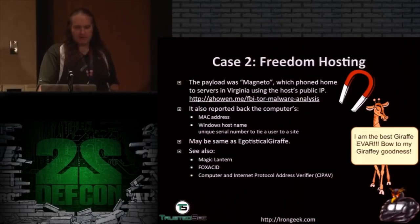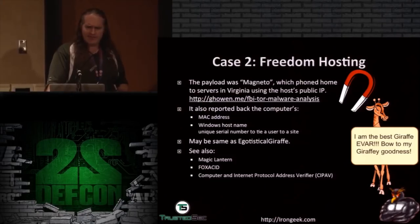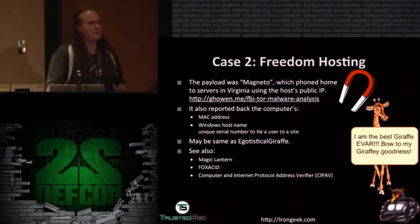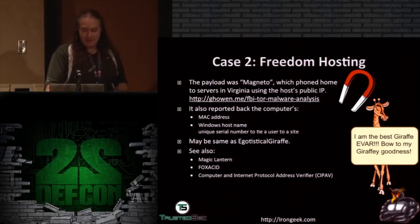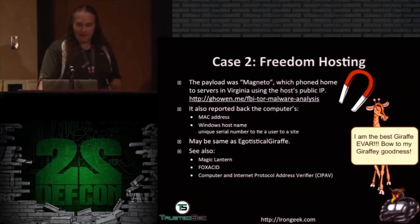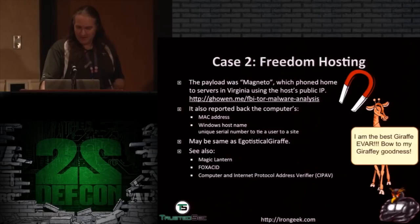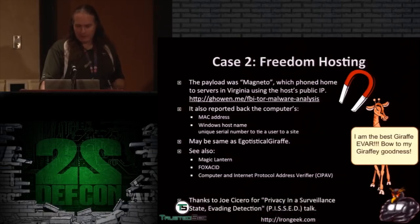This is similar to a Snowden-document project called 'Egotistical Giraffe.' There's a long history of law enforcement installing malware to track suspects: Magic Lantern, FOXACID (an NSA project), and GCHQ's equivalents. Another example is CIPAV. Thanks to Joe Cicero, who gave a great talk at ThoughtCon on privacy in a surveillance state — check that out if he gives it again.